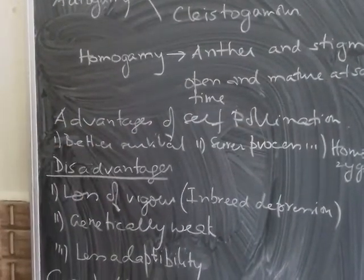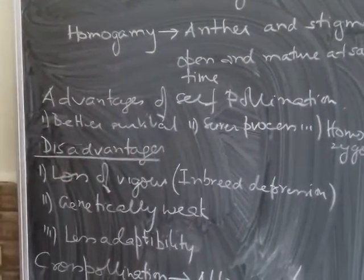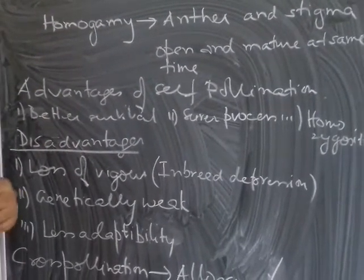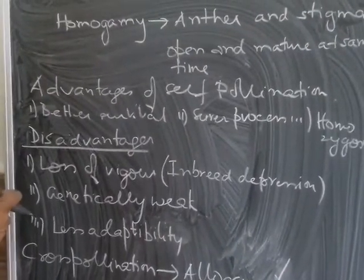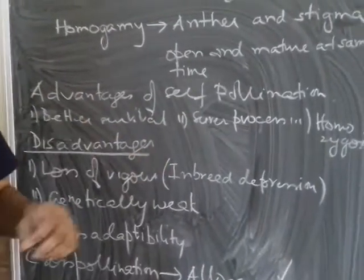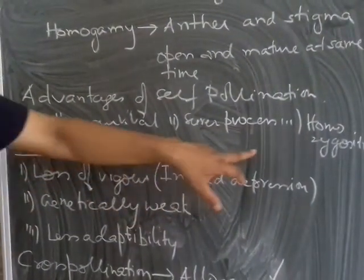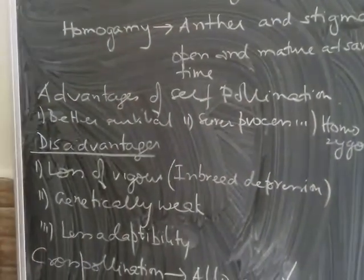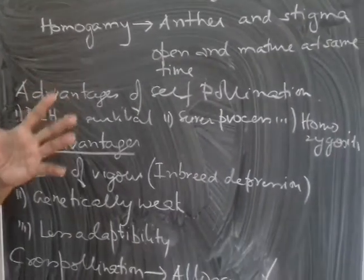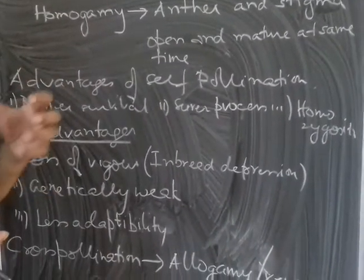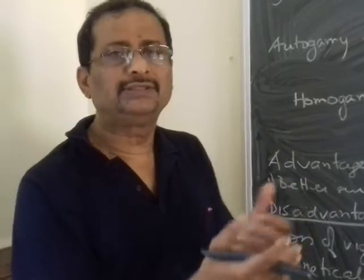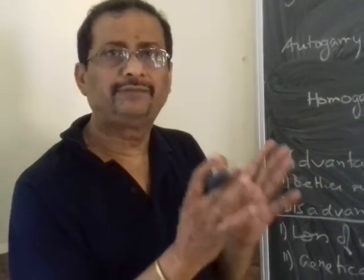The advantages of self-pollination include a better survival rate — the pollination can be conducted very safely and reliably. Second, there is homozygosity in self-pollinated flowers, meaning genetically they preserve the species. If a plant has good traits, the species is preserved because there is no interaction with other genes from different plants.